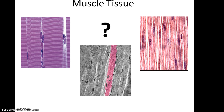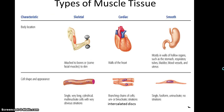This should bring flashbacks from Chapter 3. We have three different kinds of muscle tissue. Skeletal muscle tissue is attached to bones and sometimes skin to allow for movement. These cells are very long, cylindrical, and multi-nucleated, so they have many nucleuses, and they have very obvious striations.